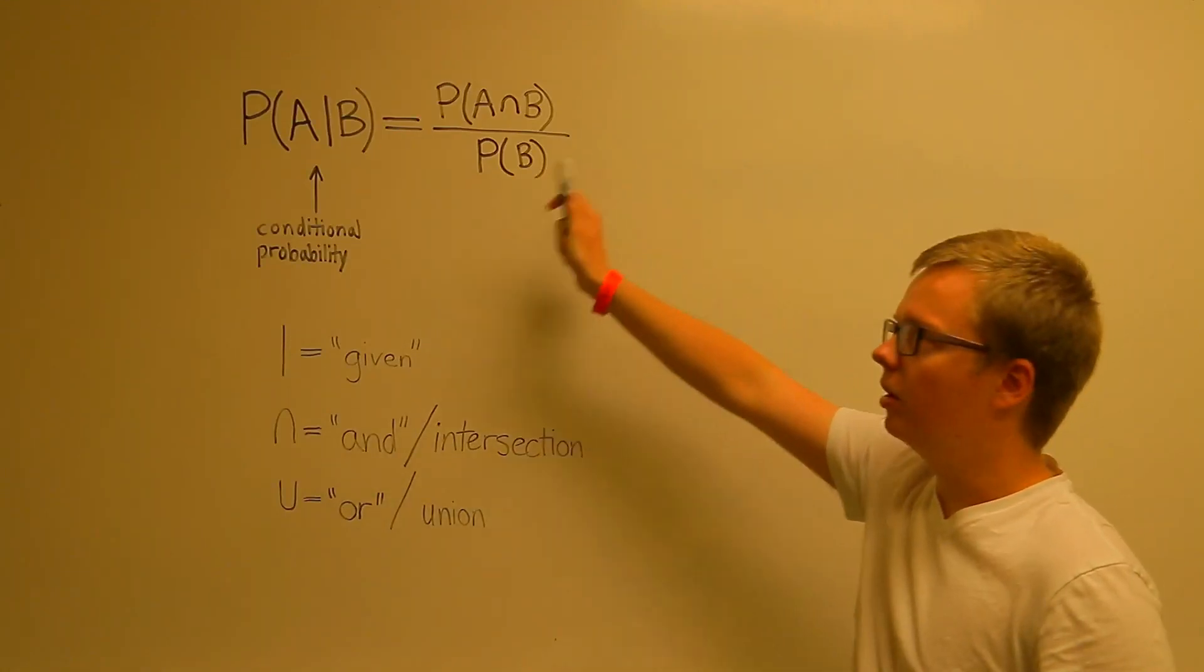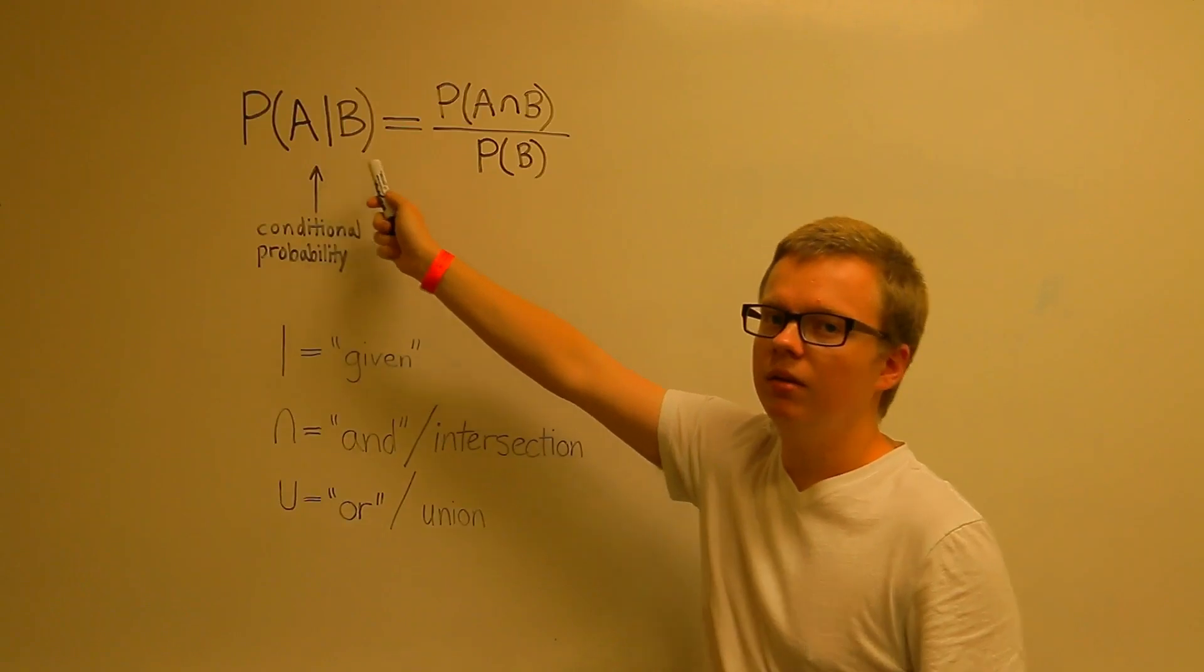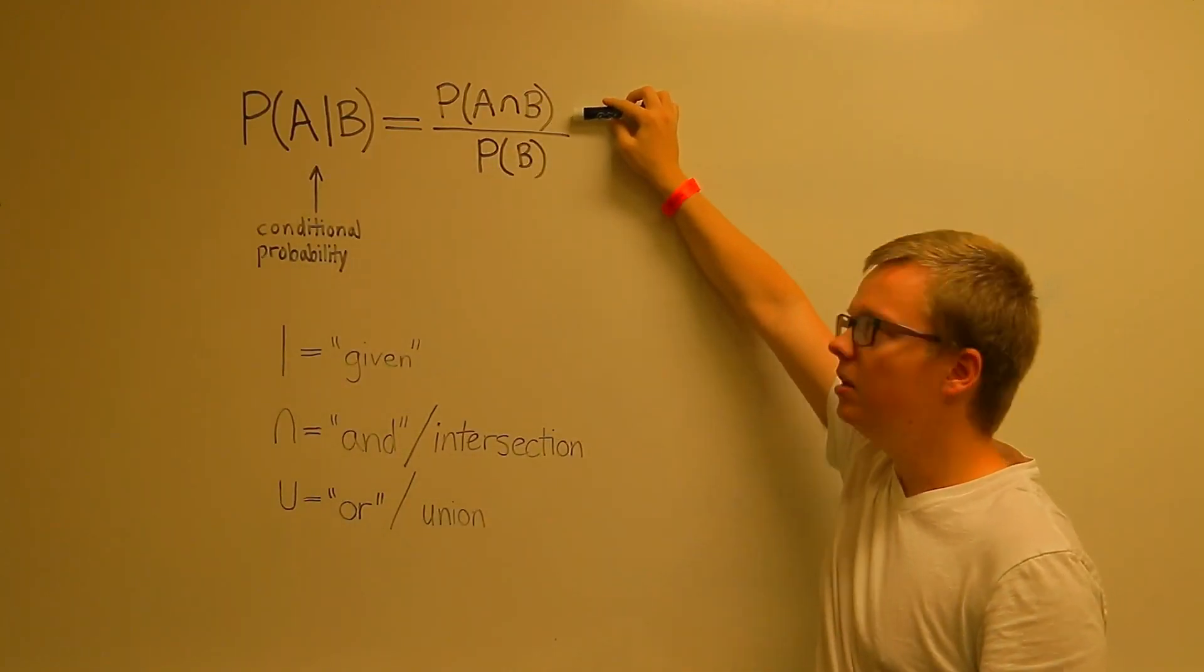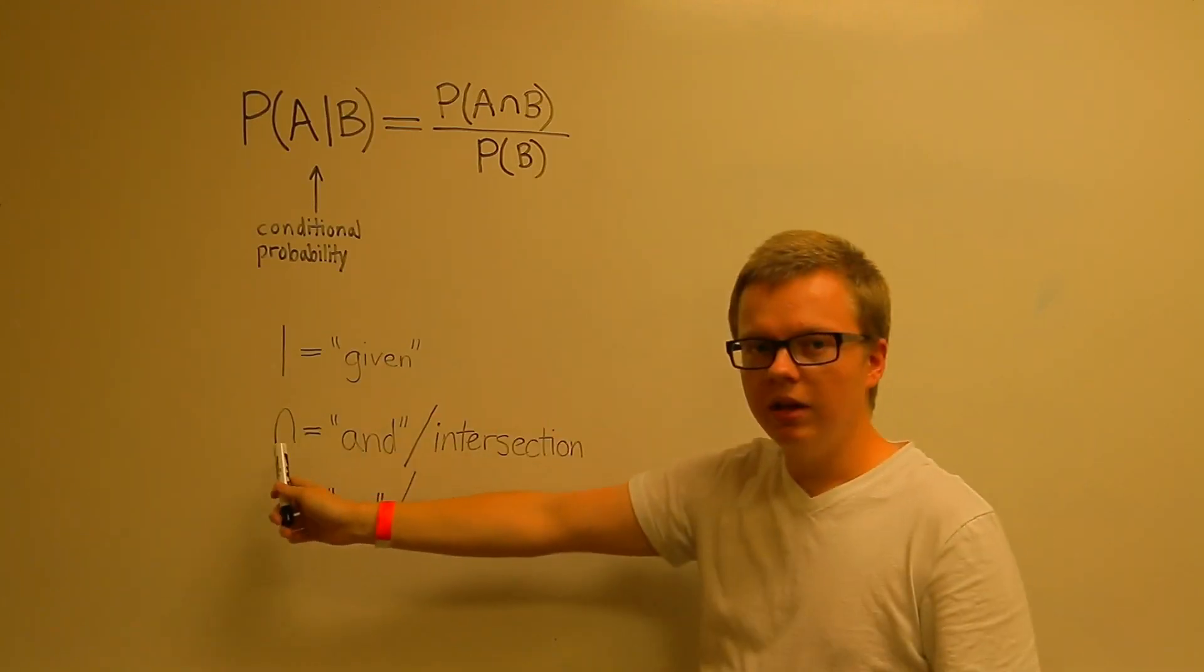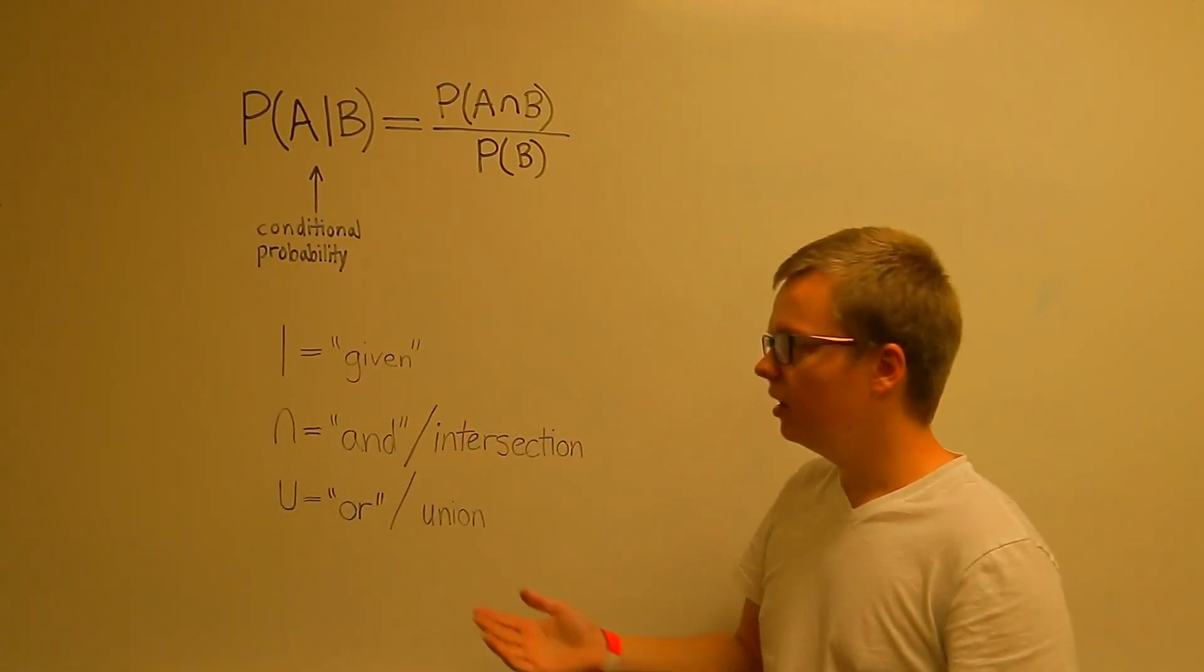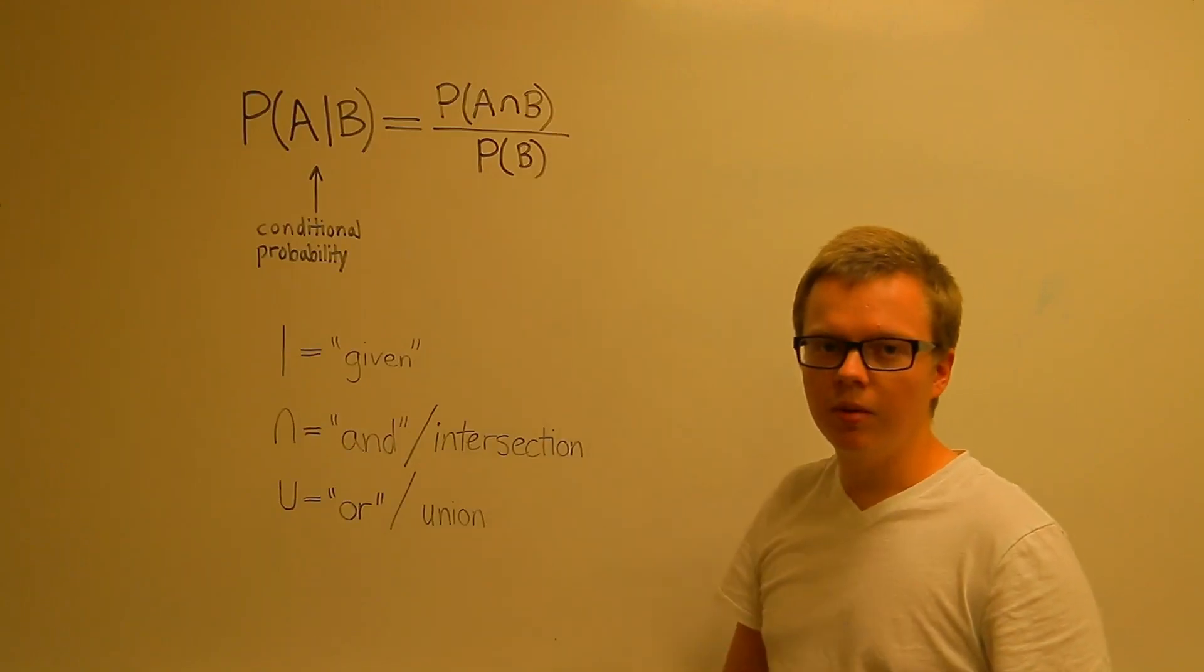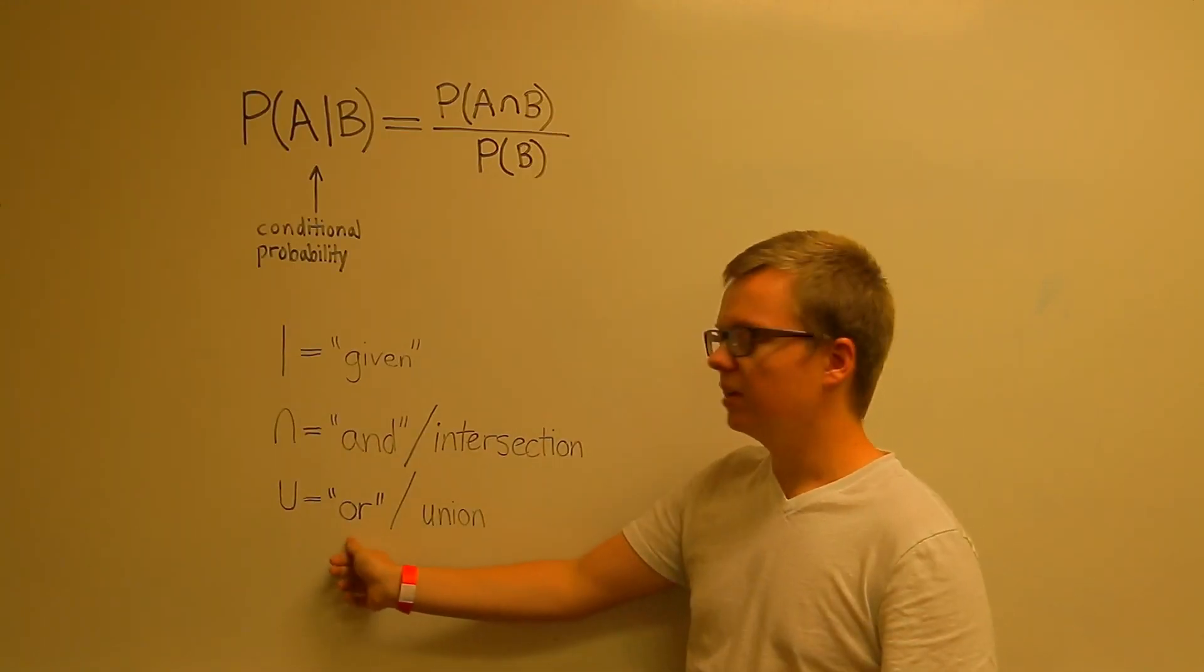So this is our formula: the probability of A given B is equal to the probability of A and B divided by the probability of B. Down here we have more definitions for some of these notations. This symbol here is the intersection and it translates as and. This symbol is the union and it translates as or.